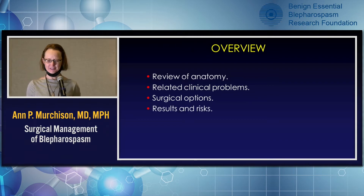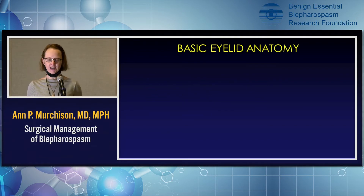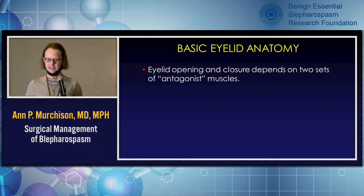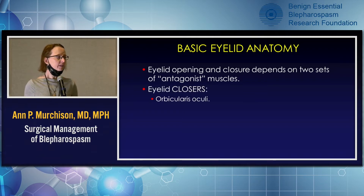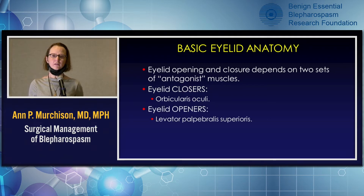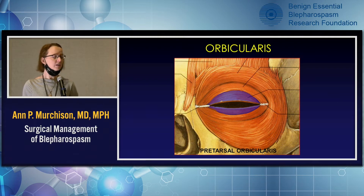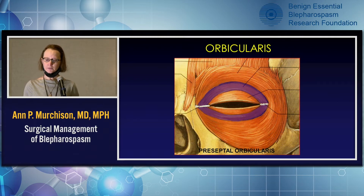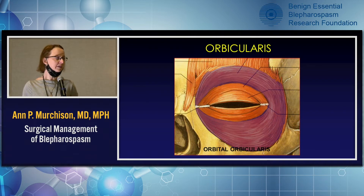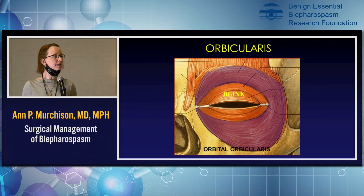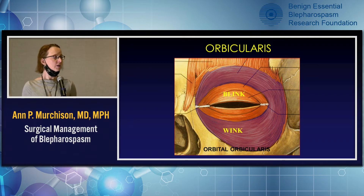We'll also cover the results and risks that we see with these surgeries. A review of basic eyelid anatomy: we think of the muscles in the eyelids as antagonistic muscles — the muscles that open and the muscles that close. The main closer is really the orbicularis oculi muscle, with the main opener being the levator muscle. The orbicularis is actually a ring of muscles — concentric rings starting at the edge of the eyelid with the pretarsal orbicularis, then the preseptal orbicularis, and outside of that the orbital orbicularis, which overlies the bone. The pretarsal and preseptal orbicularis are your blink muscles primarily, whereas the orbital orbicularis acts more with the wink and forceful closure.